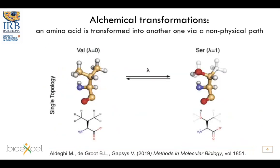How do we want to predict the effect of a mutation? We do it by calculating the free energy difference of the transformation from one amino acid into another, and we do this with a non-physical path — they call it alchemical transformation. In this alchemical transformation we have the Hamiltonian of one system coupled with the shifting parameter lambda. When lambda is zero the system resembles a valine; when lambda is one, the system is coupled with the serine.